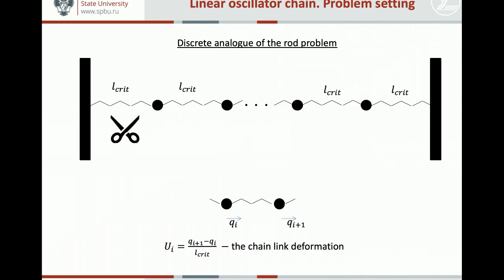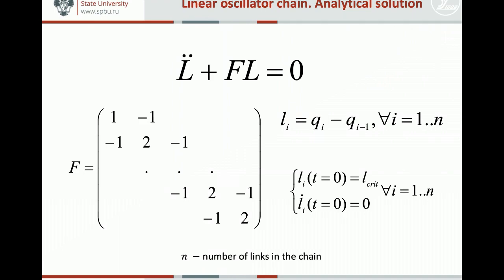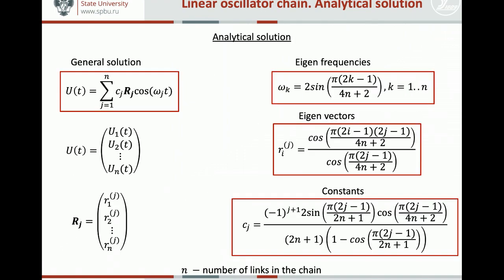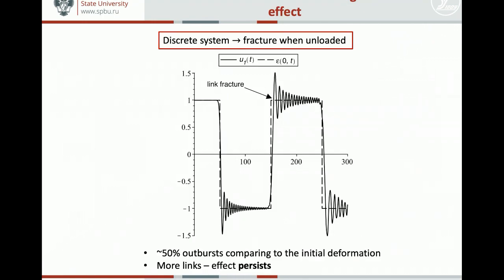But if we consider a discrete analog of our rod problem, a chain of linear oscillators with arbitrary number of links, we solve this problem for a pre-stressed chain. We write a system of differential equations. We solve it. We find the eigenvalues of the stiffness matrix. We find eigenvectors. We find constants. And finally, we obtain the solution.